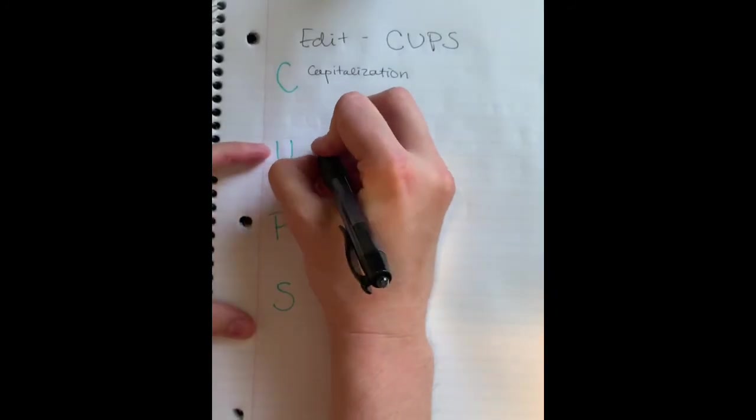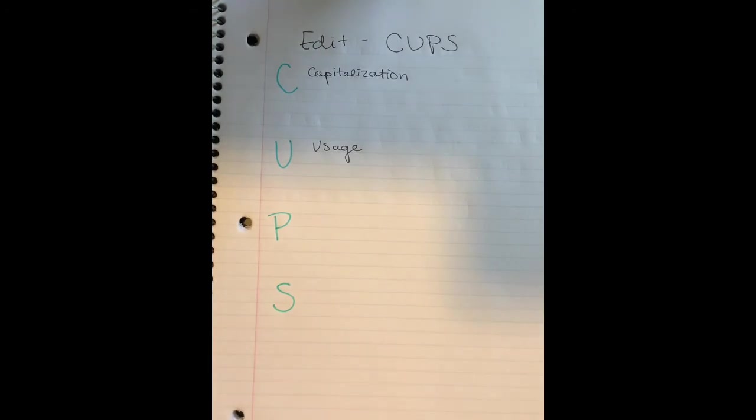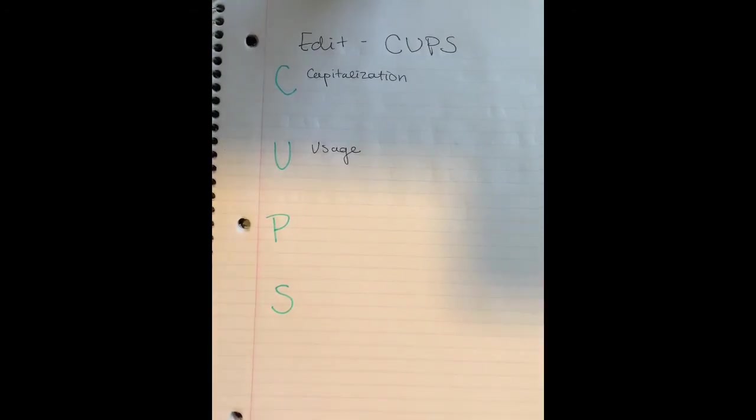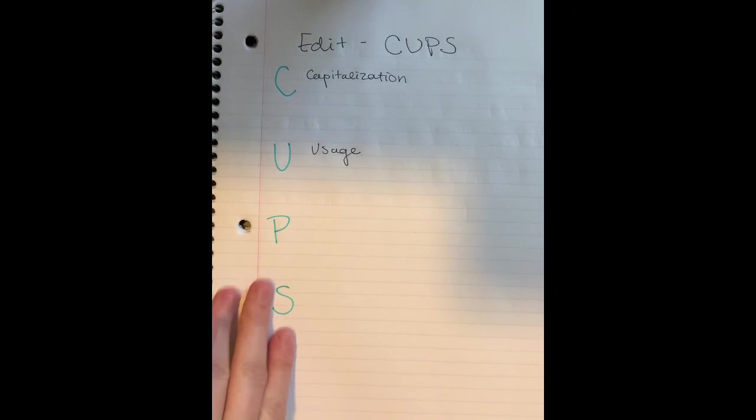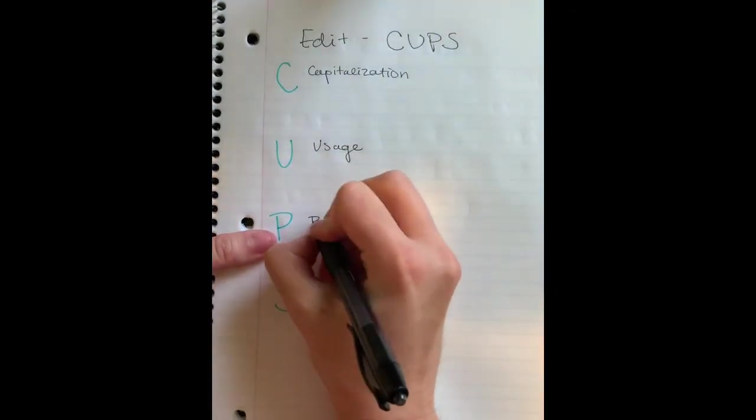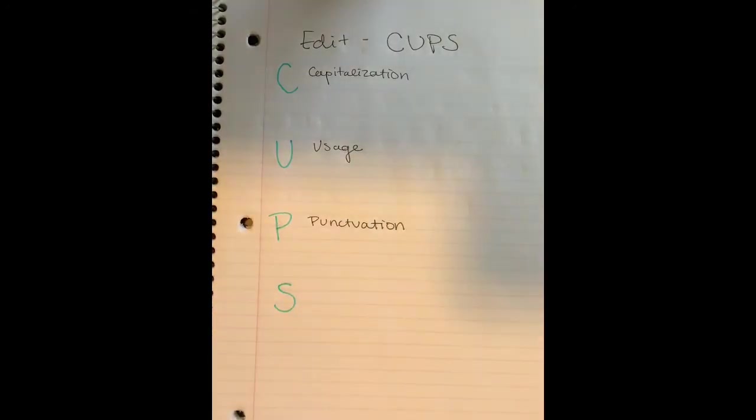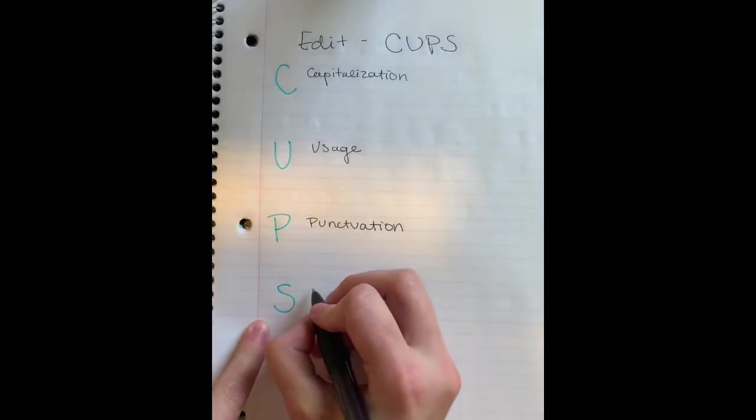The second one is usage, which is like grammar. Does it sound right? We don't say they is going to the store. We say they are going to the store. And again, we're going to add specific examples at a later time. The next one is punctuation. This one's very important too. You're in fifth grade. You know that every sentence ends in a period or other kind of punctuation, right? And we're going to start to work on those commas as well.